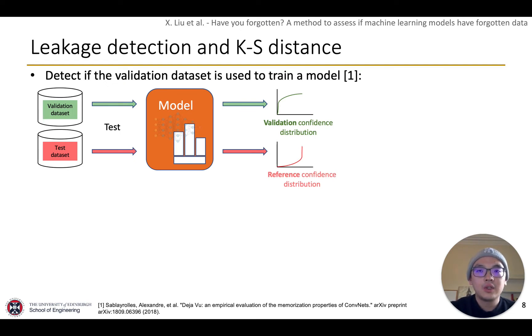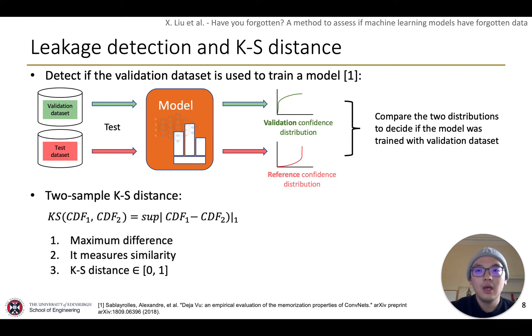Compared to distributions with KS distance, we can tell how similar the two distributions are. Hence, we can detect if the validation dataset is leaked. KS distance is the maximum difference between two cumulative distributions. It measures similarity, and it's in the range of 0 to 1.